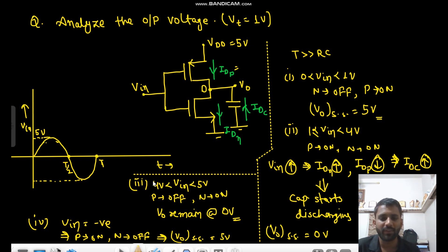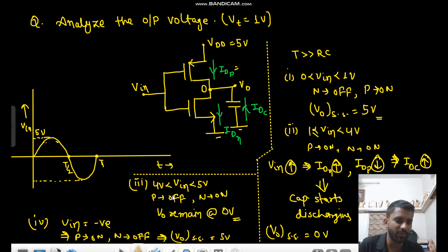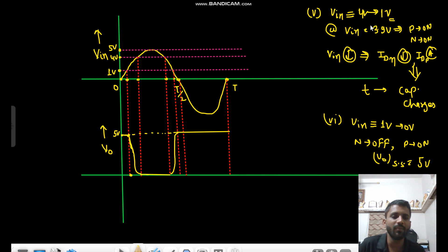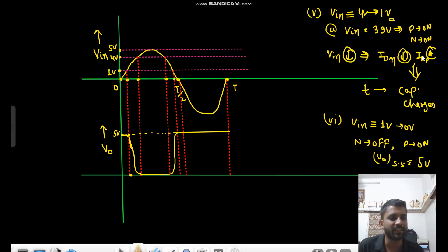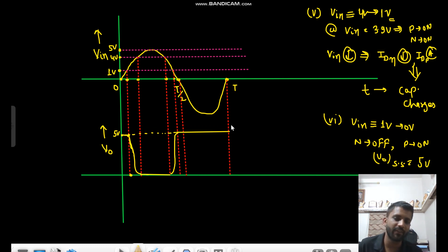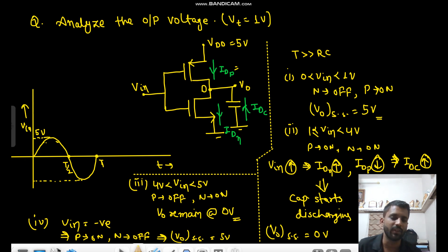To summarize: from 0 to 1V — PMOS on, NMOS off — remains at 5V. From 1 to 4V going up — both on, IDN increasing, capacitor discharges from 5V to 0V. From 4 to 5V — PMOS off, NMOS on, no supply — remains at 0V. Coming down from 4 to 1V — both on, IDP increasing, capacitor charges from 0 to 5V. From 1 to 0V — NMOS off, PMOS on — steady state 5V. Negative cycle — Vnot remains at 5V.